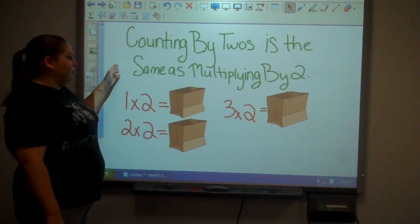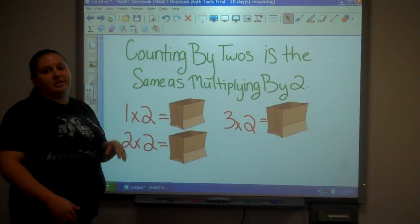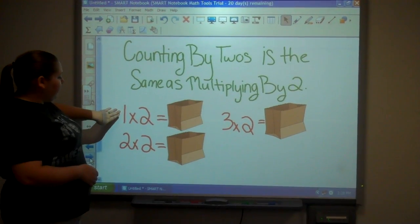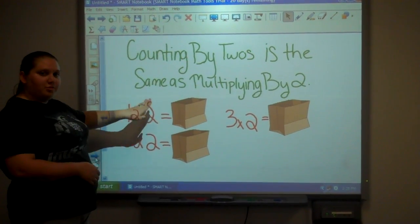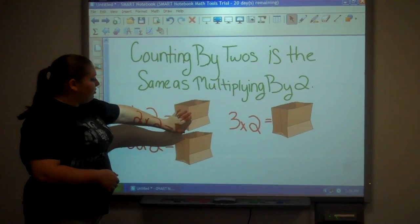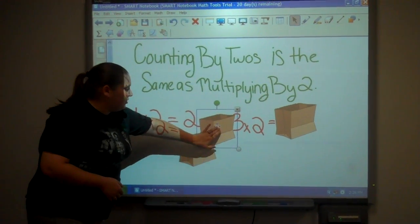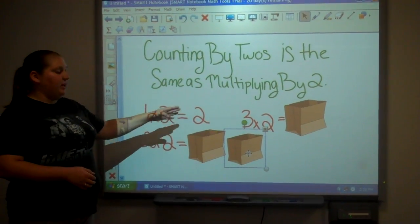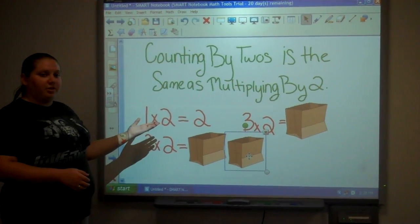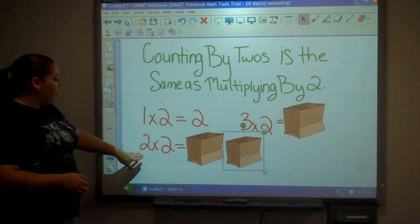So counting by twos is the same as multiplying by two every time. So we take the one orange, cut it in half, and we have two, so it's one times two. We move these so the students won't know the answer, they get to participate, and now one times two equals two from the lesson we learned before of counting by twos.